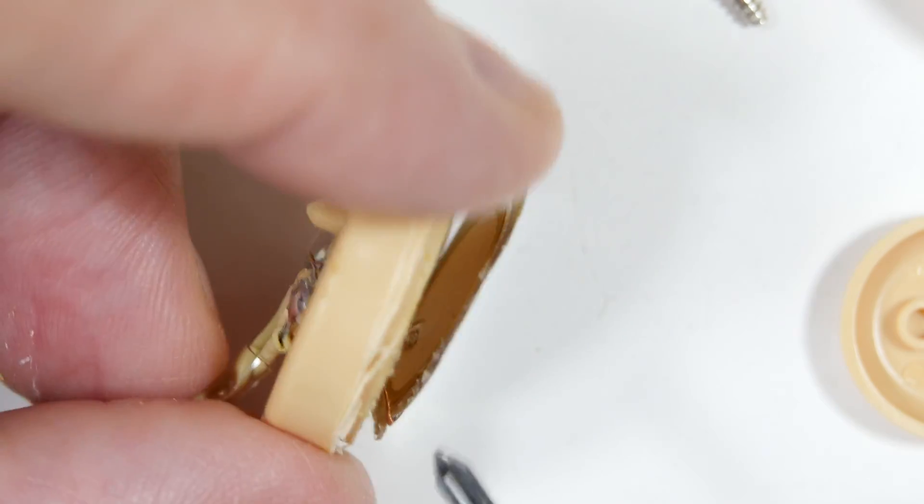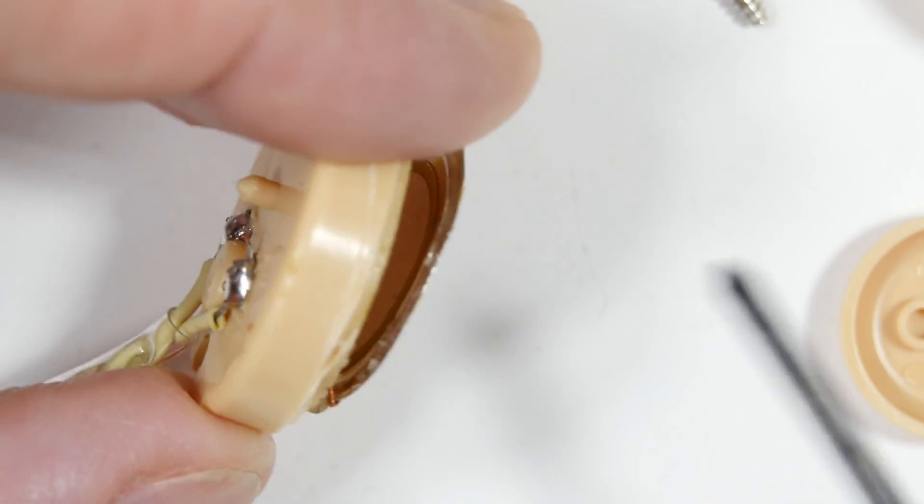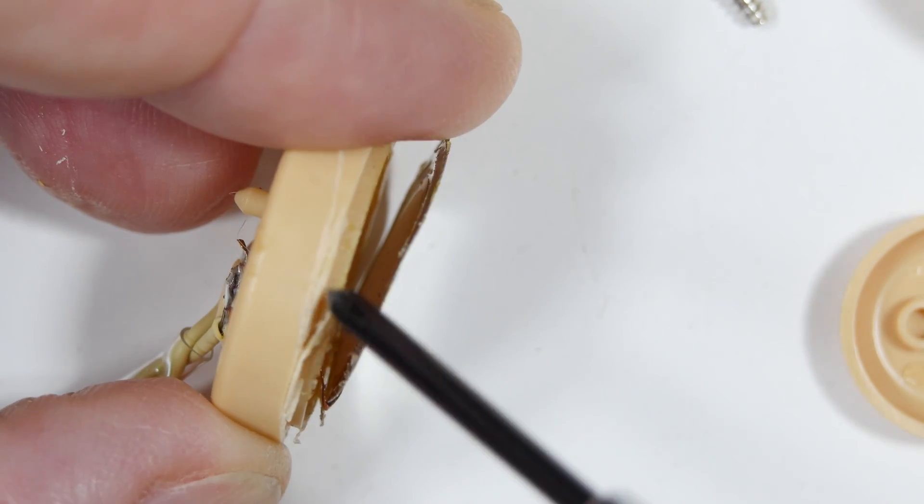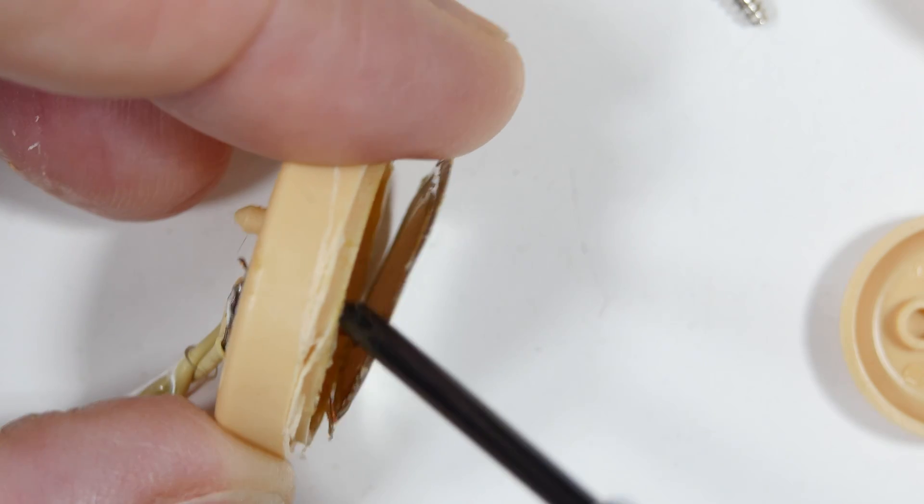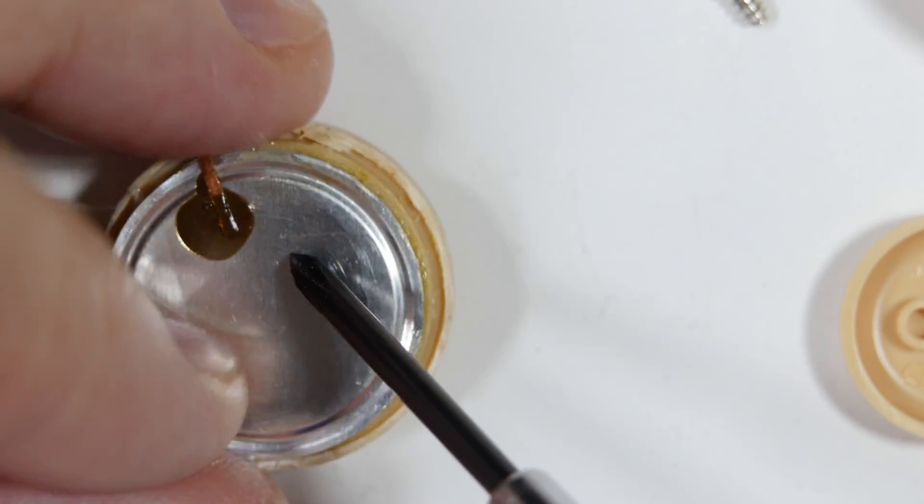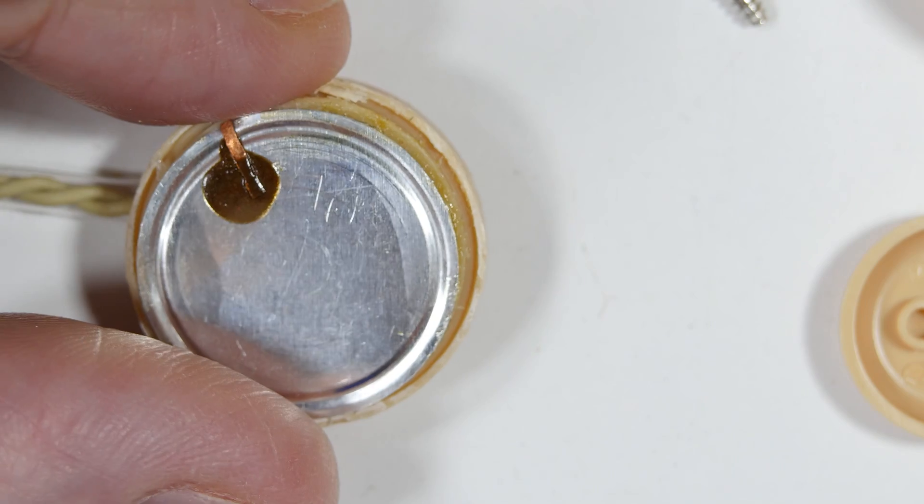It comes up here, and so again one of the fixes was to drill a small hole and to feed a wire up, drill another small hole here, put the wire through here and connect it to the diaphragm.